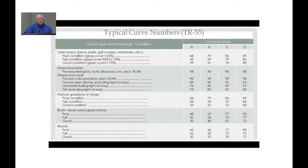Typical curve numbers provided in TR-55 are summarized here. Cover types and hydrologic conditions are provided for things like open spaces in poor condition (grass cover less than 50%), fair condition (grass cover 50 to 75%), and good condition (grass cover greater than 75%). Curve numbers are provided for each of the four hydrologic soil groups A, B, C, and D. Notice that curve numbers increase as the soil type increases from A to D, reflecting soils with increasingly higher runoff potential.